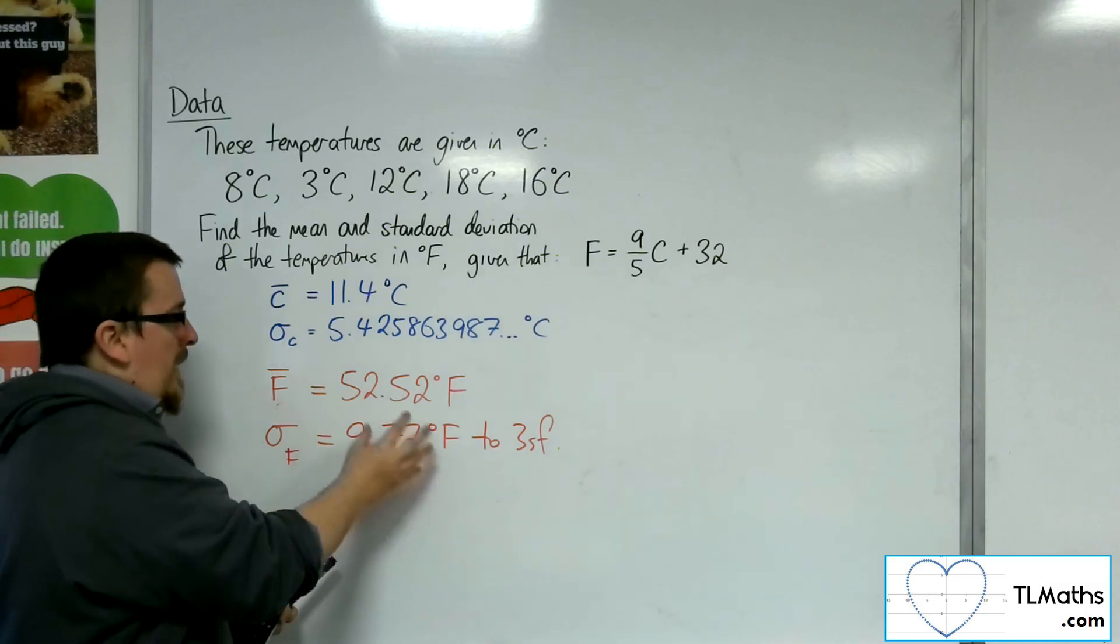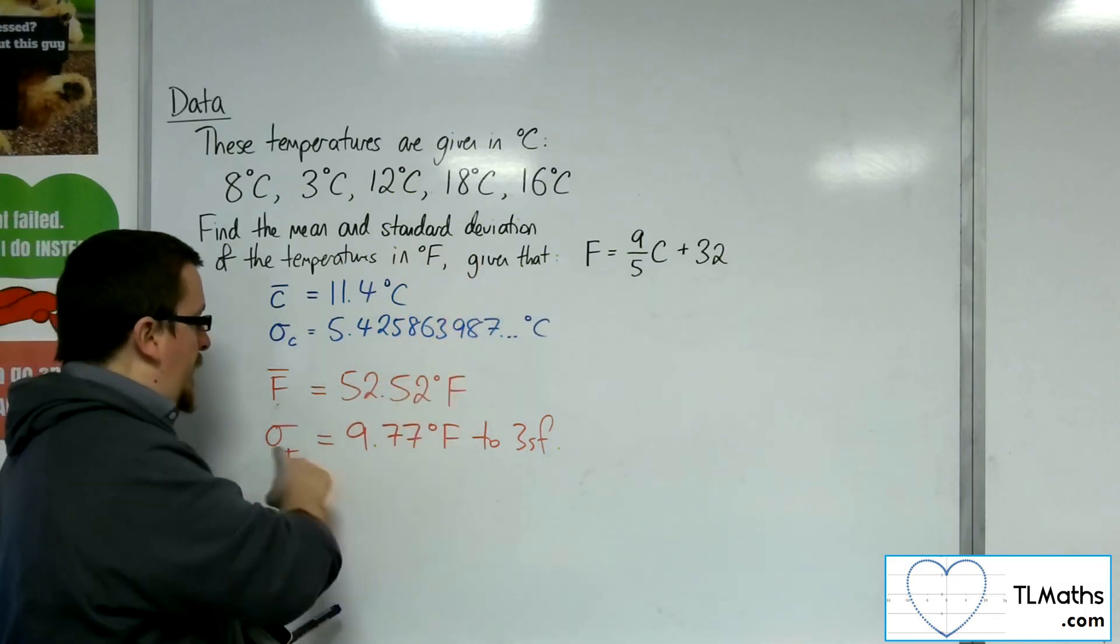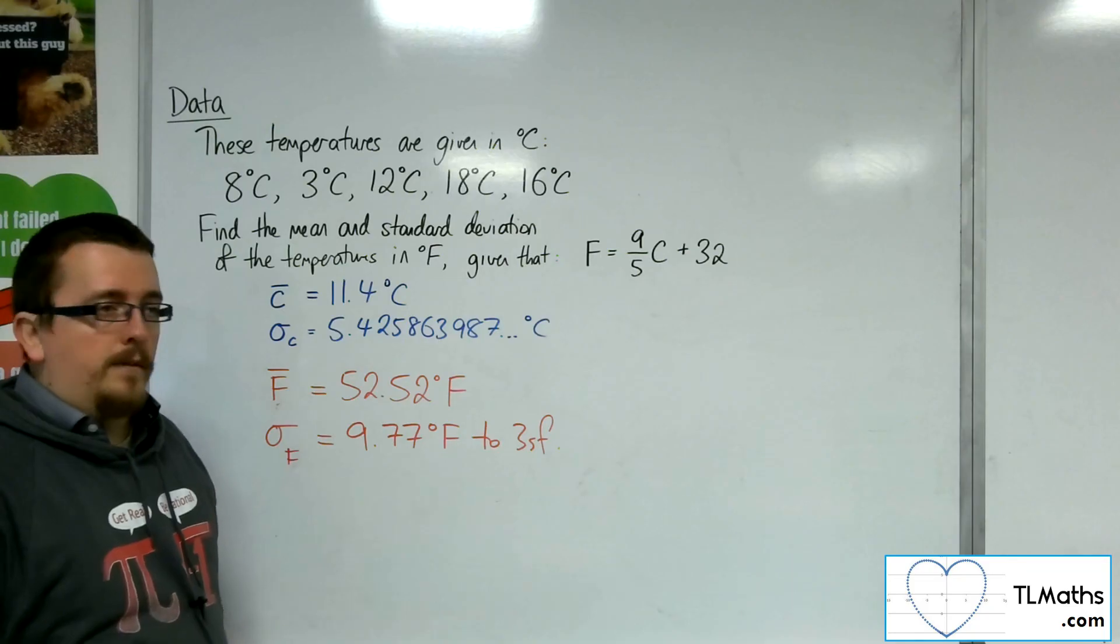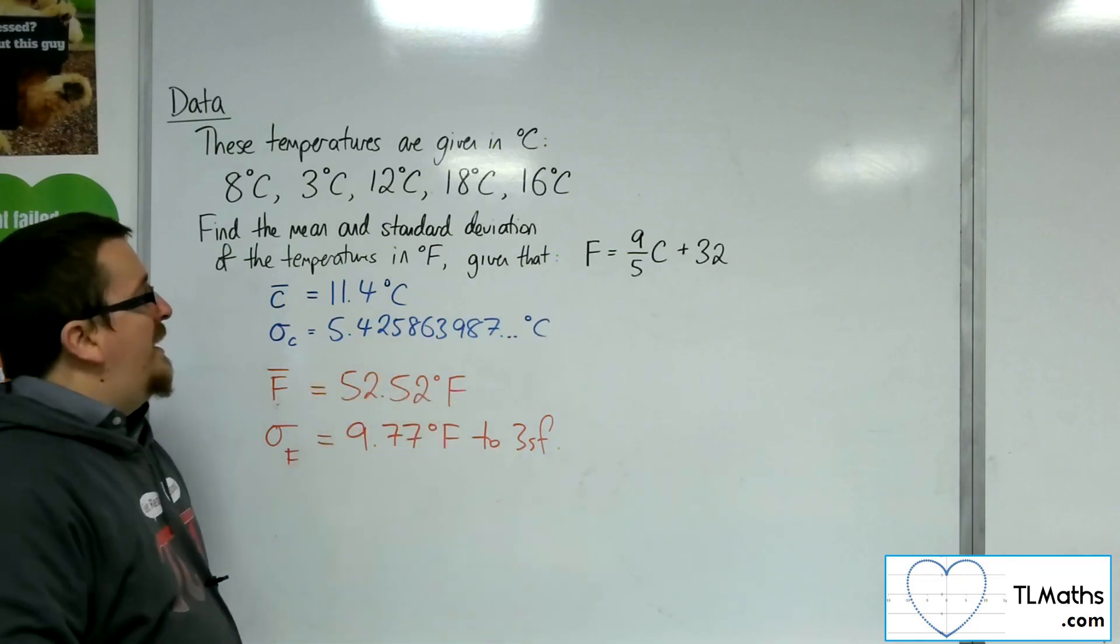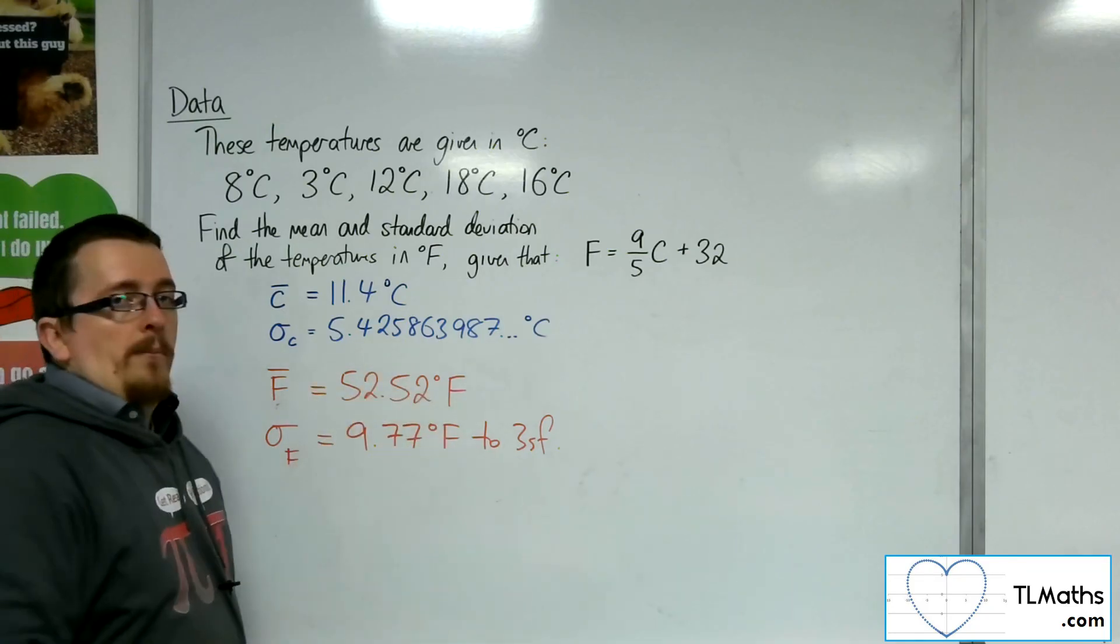And obviously, if you're an MEI, it would be 9/5 of the number that you had there. So that's how we can use linear coding to save up some time.